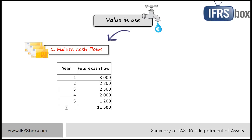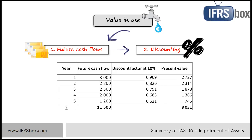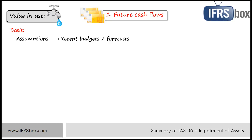Once you have your cash flows in a table, select an appropriate discount rate and discount those future cash flows. The sum of present values of cash flows in individual years is value in use. Cash flow projections should be based on reasonable and supportable assumptions that represent management's best estimate of the economic conditions that will exist over the remaining useful life of the asset. Projections shall be based on the most recent financial budgets or forecasts approved by management, but exclude any cash flows related to future restructuring or from improving the asset's performance. Projections shall cover a maximum period of five years unless a longer period can be justified.